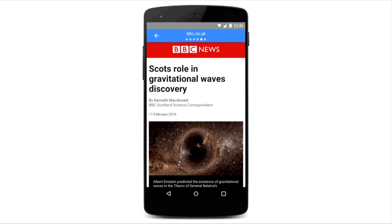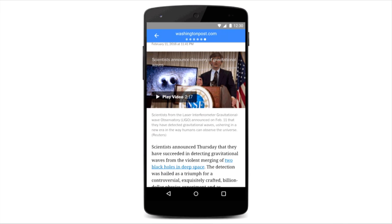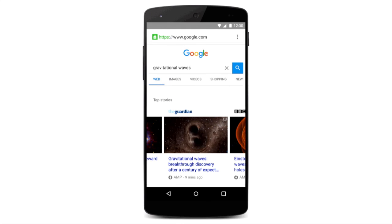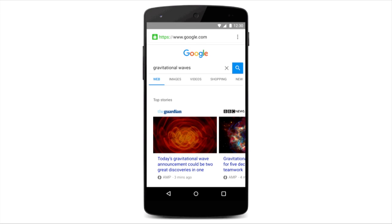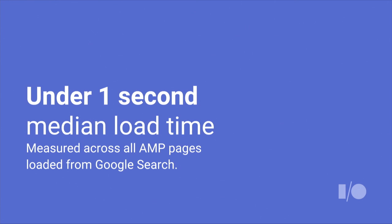You can swipe between results, which is also not something you can do with an everyday web page. You can go to your browser, search for something newsy, and you should see these AMP results. AMP is pretty fast, but we haven't talked that much about how fast it is. Frankly, we didn't know - it was an experiment. But it's been out there for a while now, and this is what we're seeing across all traffic where Google search is leading to AMP results.